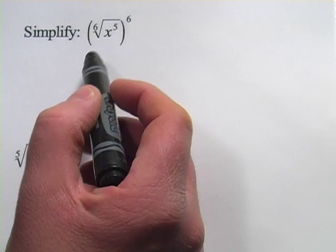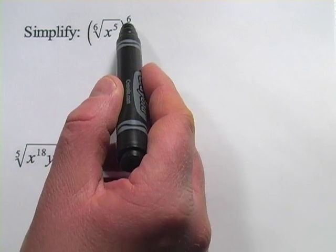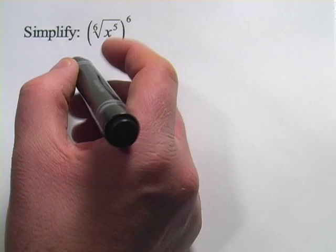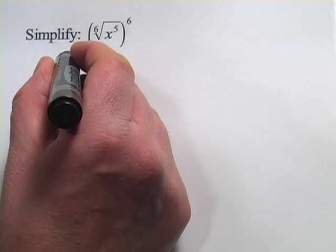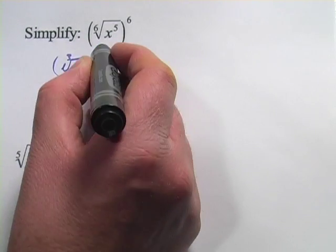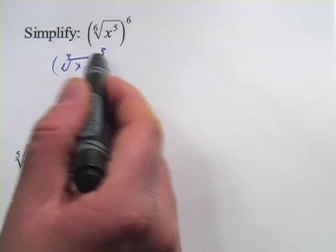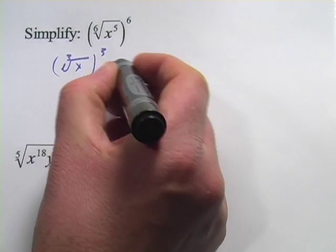In the first one, we have the sixth root of x to the fifth, all raised to the sixth power. Now you should know, if you have, let's say, the third root of something and you raise it to the third power, those two things cancel out. So that's just going to be x.